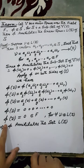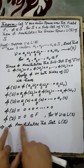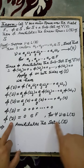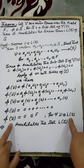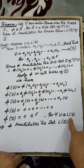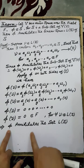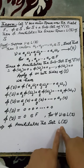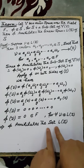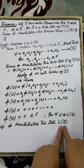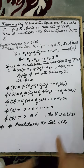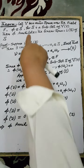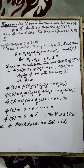Therefore, Phi annihilates each element V contained in the linear spanning set spanned by the set S. Therefore, Phi annihilates the spanning set spanned by the set S, which is our required result.